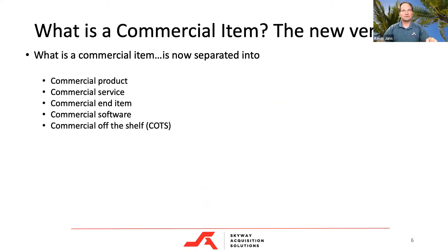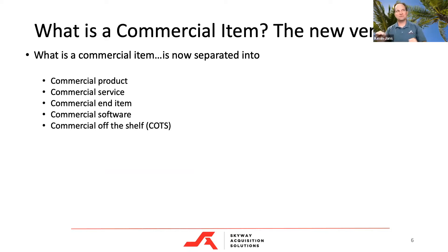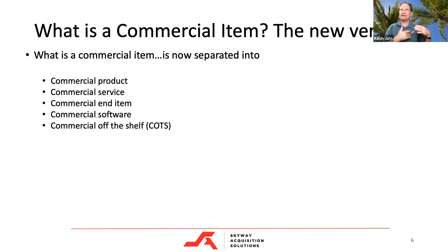So what are we talking about specifically? The FAR used to define commercial item as one broad category. Now it's broken out by commercial product, service, item, software, and commercial off-the-shelf item — five different elements. It's much more wordy, but it doesn't fundamentally change anything. It's a lot easier to understand for those who don't live in the FAR.